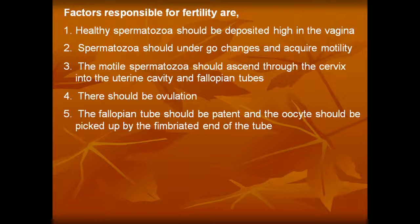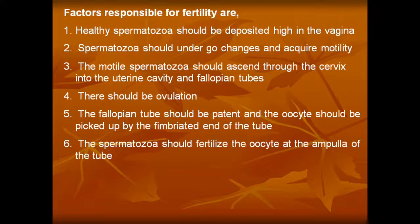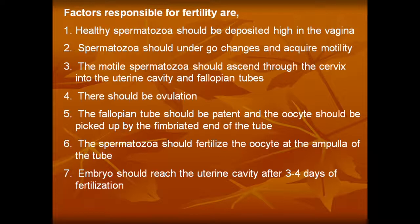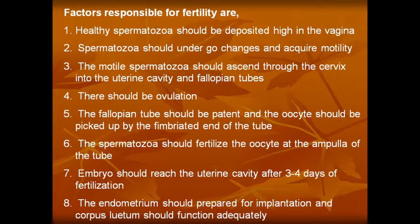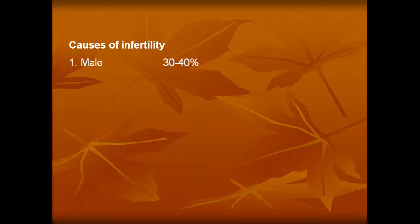There should be ovulation. The fallopian tube should be patent and the oocyte should be picked up by the fimbriated end of the tube. The spermatozoa should fertilize the oocyte at the ampulla of the tube. The embryo should reach the uterine cavity after three to four days of fertilization. The endometrium should prepare for implantation and the corpus luteum should function adequately.